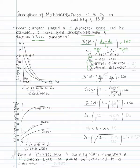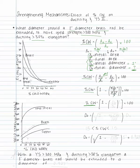D-naught is the initial diameter, which is given as 1 inch, and d-sub-f is the final diameter, which is what we are looking for. From there, we can simplify the percent cold work equation and substitute in the equations for area. After substitution and elimination of values, our new percent cold work equation is: 1 minus (df divided by d-naught) squared, multiplied by 100.